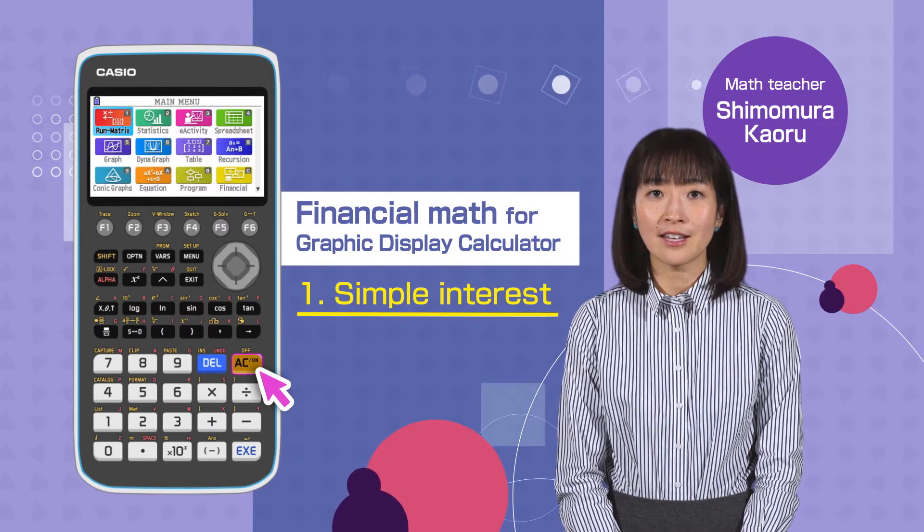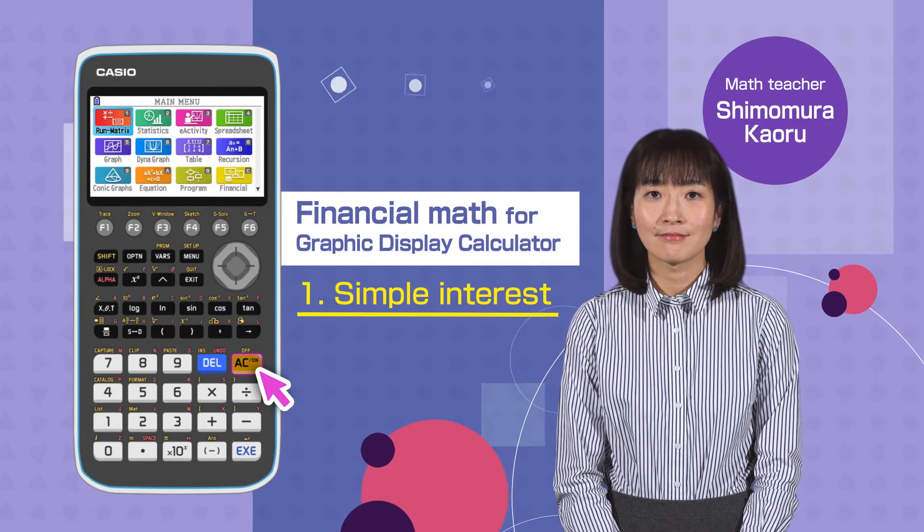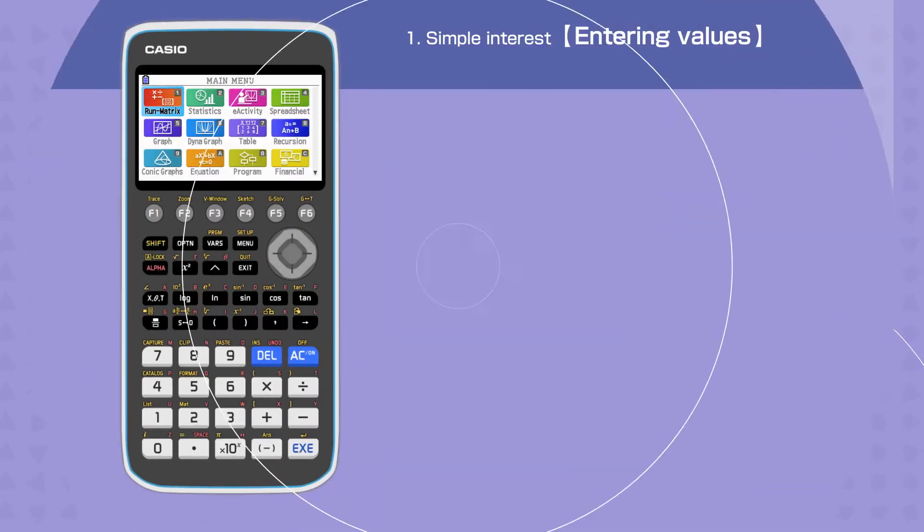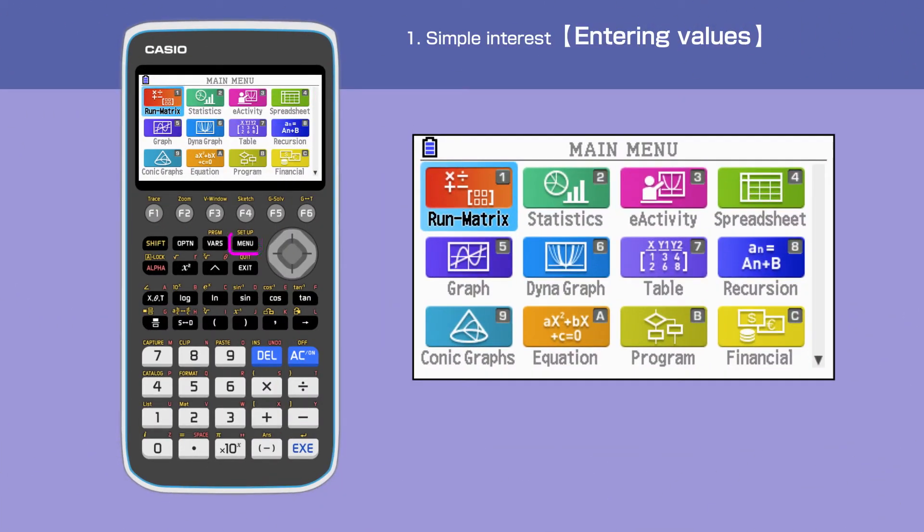Switch on your calculator by pressing the AC button. Press the menu button to open the main menu, then move the cursor or press C to select Financial.